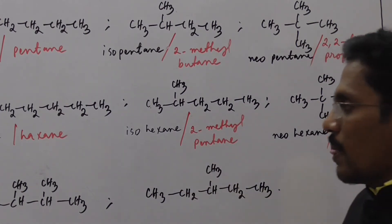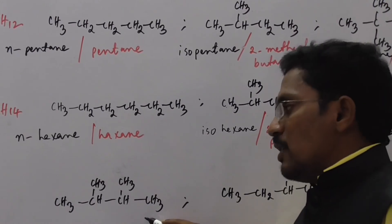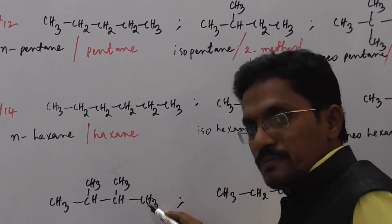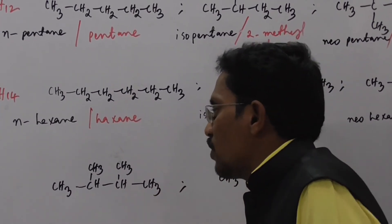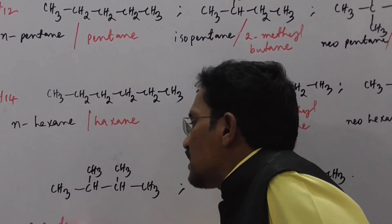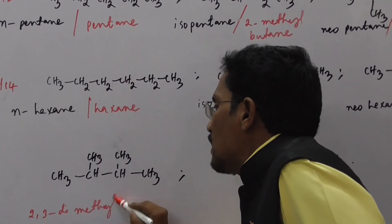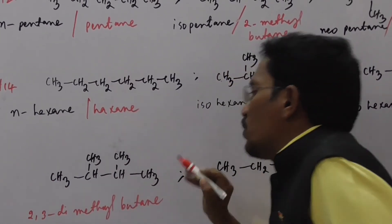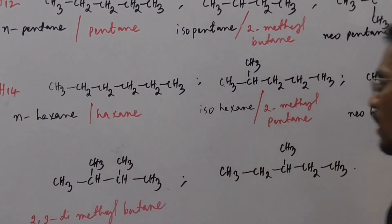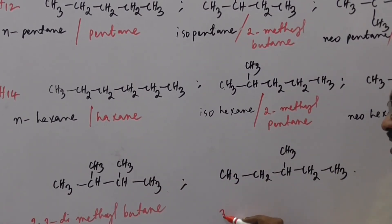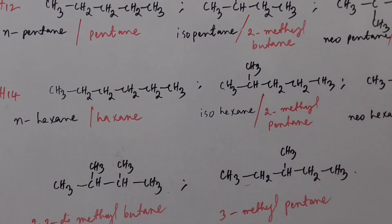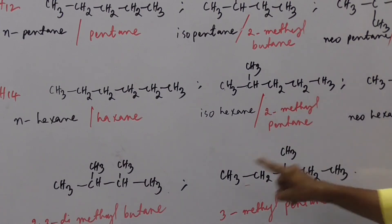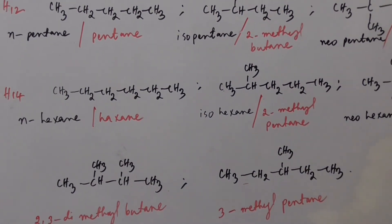Another compound has 4 carbons in the chain with a methyl at the second carbon and a methyl at the third carbon, so its IUPAC name is 2,3-dimethylbutane. And one more compound has 5 carbons in the chain with only 1 methyl branch at the third carbon, giving the IUPAC name 3-methylpentane. So 5 structural compounds are chain isomers that can be written for the formula C6H14.